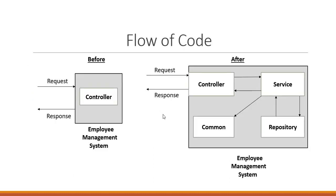Earlier we were just getting the output or inserting something by using the controller — this is represented in the 'before' diagram. Now we will be dividing the code into layers as shown in the 'after' diagram. We will get the request in the controller, send the data to the service layer, the service layer will get data from repositories, call the common layer for any reusable functions, and eventually return the data back to the controller, which returns the response.